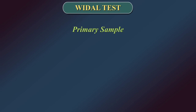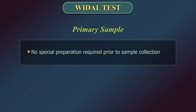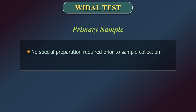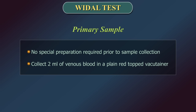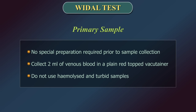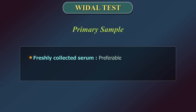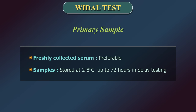No special preparation of the patient is required prior to sample collection. Collect 2 ml of venous blood in a plain red-topped vacutainer. Do not use hemolyzed or turbid samples. Though freshly collected serum is preferable, samples can be stored at 2–8°C for up to 72 hours in case of delay in testing.